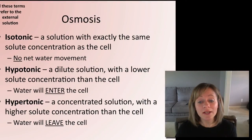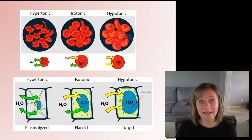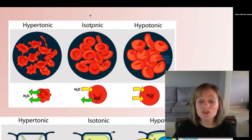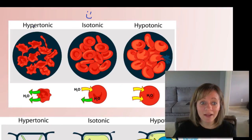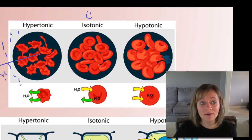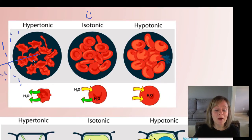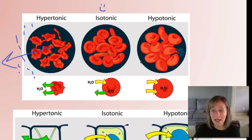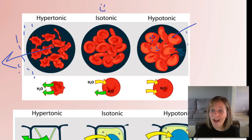Let's look at these situations with animal and plant cells. Up top we're looking at an animal cell — a red blood cell. In an isotonic solution, there's no net water movement and the cell is happy. In a hypertonic environment, there are lots of solutes outside, so water leaves the cell and the cells become shriveled. In a hypotonic environment, there's not enough solute outside, so water enters the cell and the cell will lyse, or burst — L-Y-S-E. That's not good either.